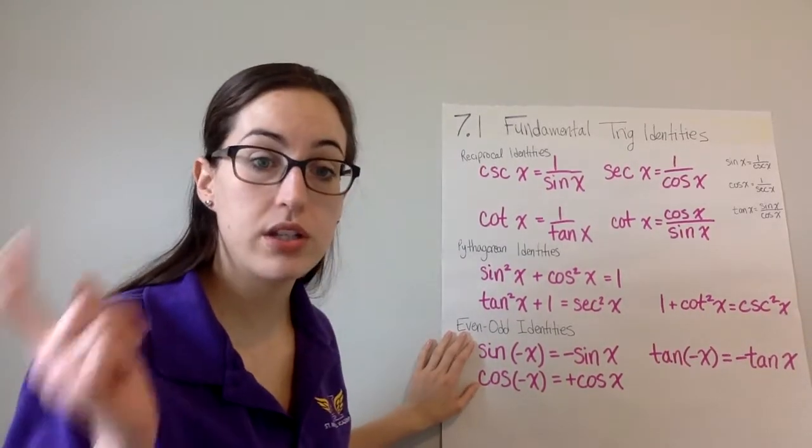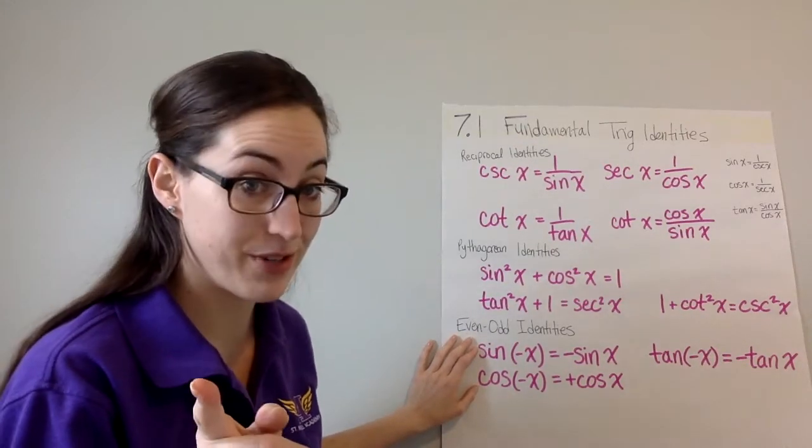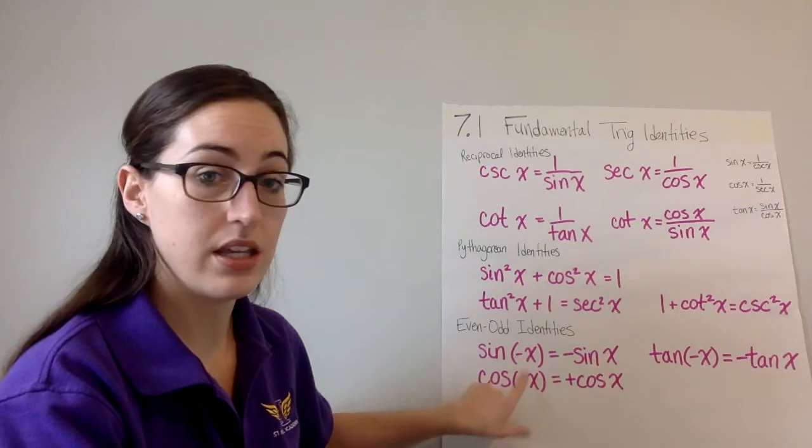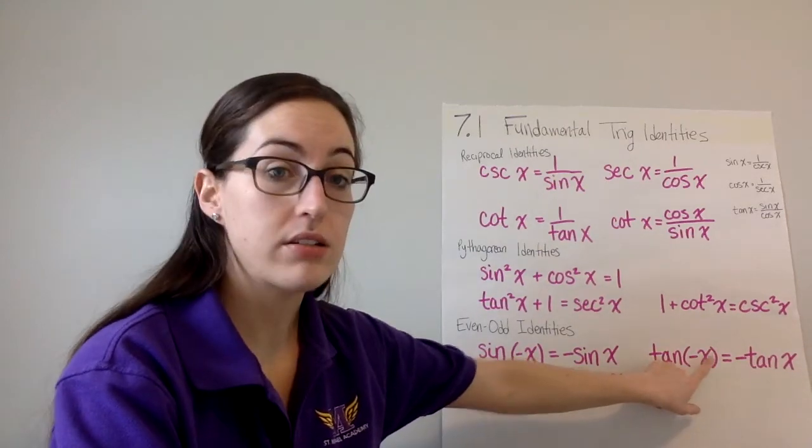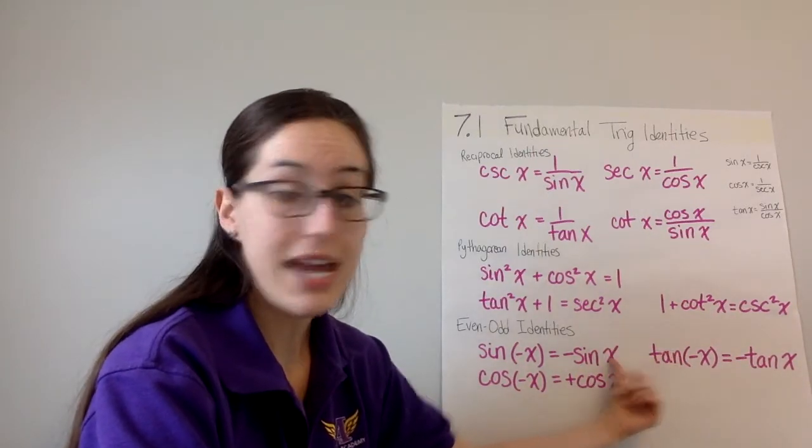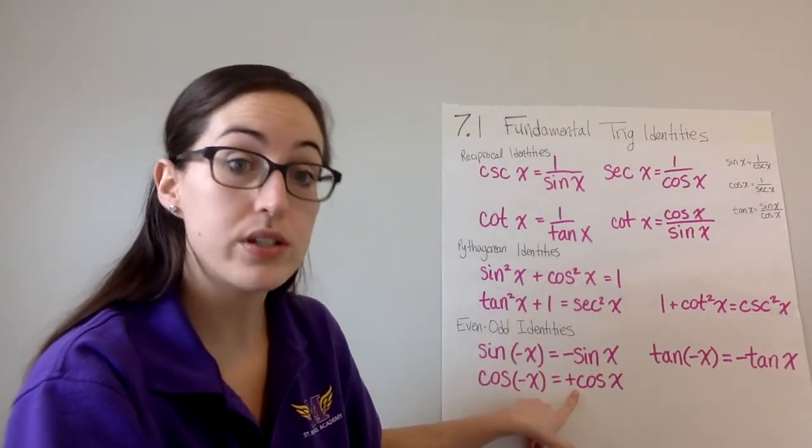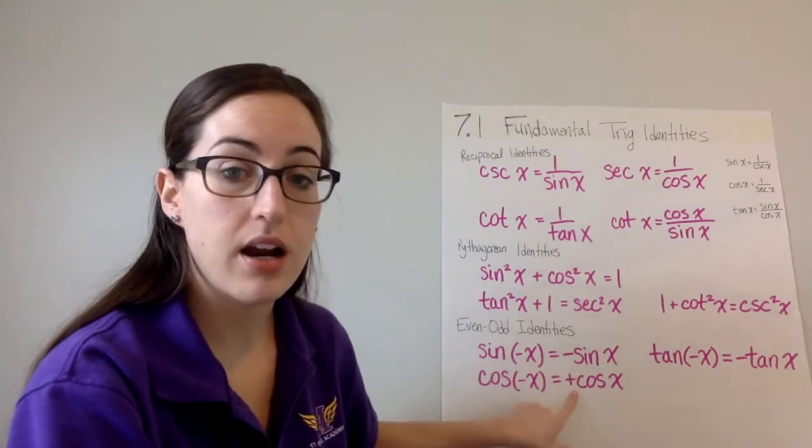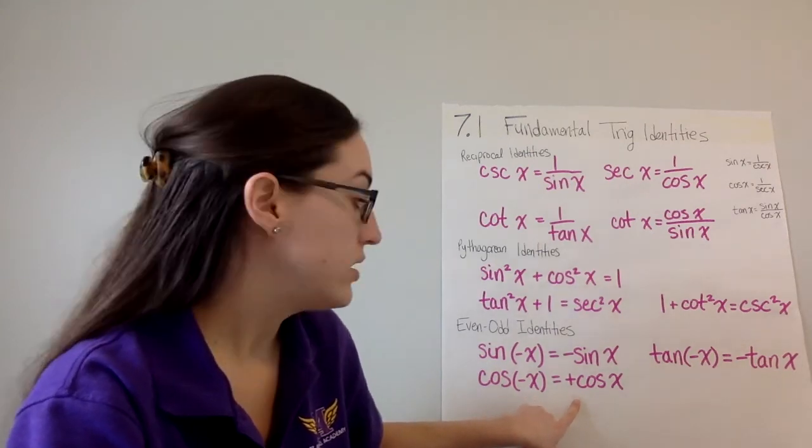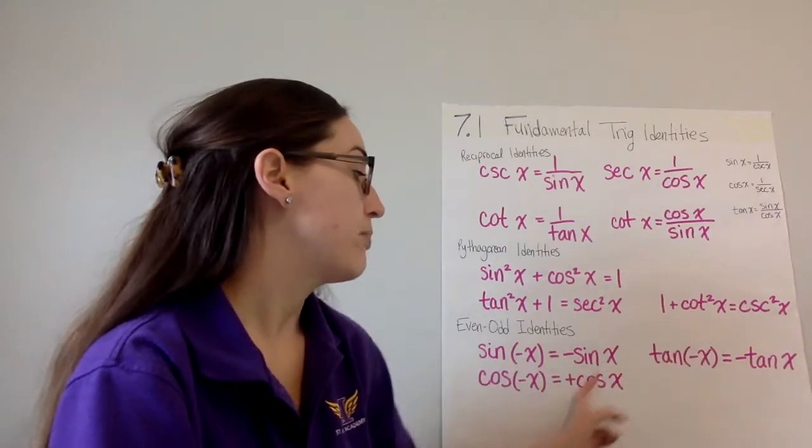Our odd-even identities, we mentioned this back in the last chapter. Be really careful. What do you notice is different? We talked about this. Notice we're taking the negative of x for our input being a negative x. What do you notice about the outputs? Sine and tangent are both negative sine x, but cosine is positive. Big difference. That was a quiz question in chapter 6. You don't have to put a plus there, I just really wanted to make sure that you don't put a negative or think that the negative was forgotten. It's not really a plus, I'm just showing you the difference there. Negative, negative, positive for those.